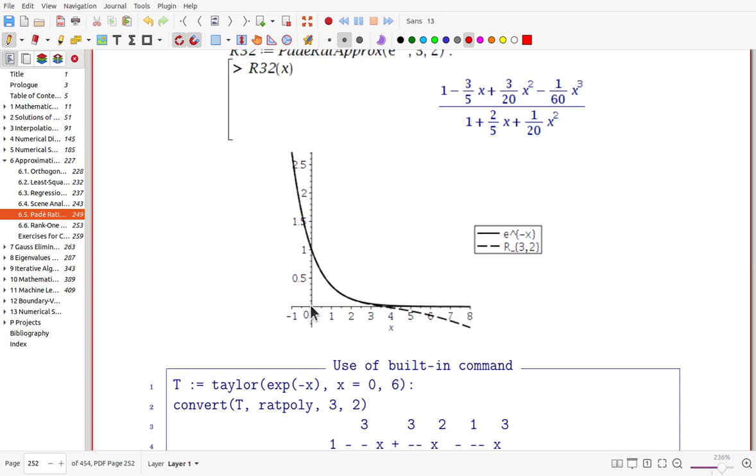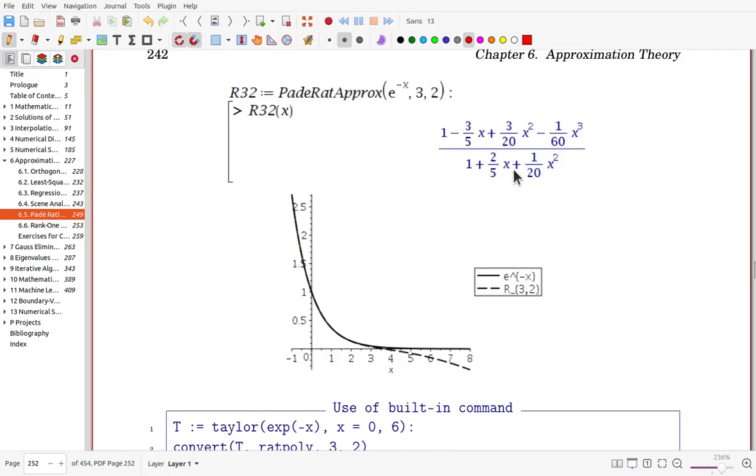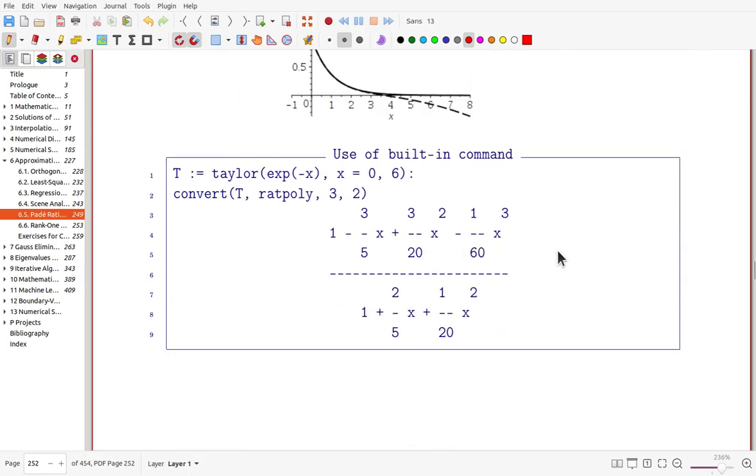You may check this, for example, by using fifth order polynomial, and try to plot for the given function. Then you'll see, and the Padé rational function approximates better. So you can easily check. If you are interested in, you can check it yourself.